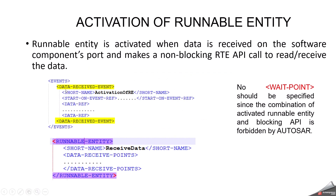Activation of runnable entity. In the activation of runnable entity approach, you map with events. Since it is an R-Port, here I have chosen a data received event. Via the data received event, this runnable entity will get triggered, and this also makes a non-blocking RTE API call to read or receive data. An important point: no wait point should be specified, since the combination of an activated runnable entity and a blocking API is forbidden by AutoSAR. You can check the AutoSAR version to decide how to configure activation of the runnable entity.